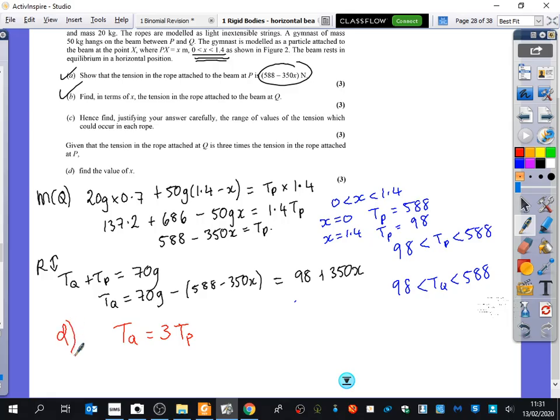So all you then do is take this thing and put it in here, and you take this thing and put it in here and times it by three, and you solve the equation to find out what x is. 1.19. So you get x is 1.19.